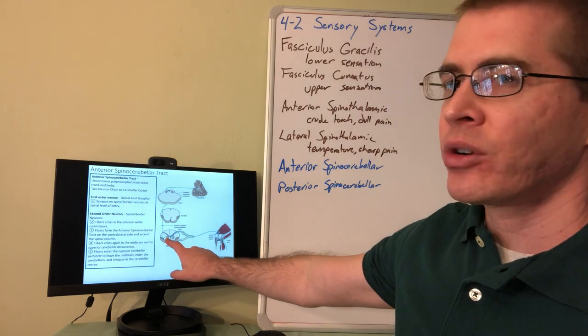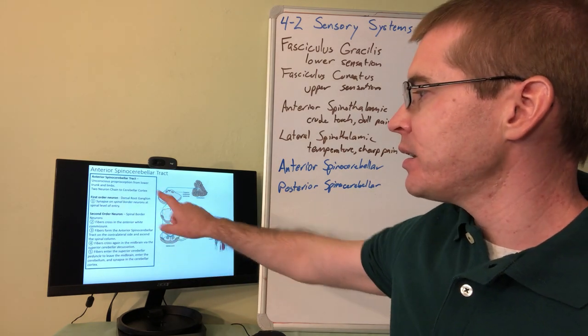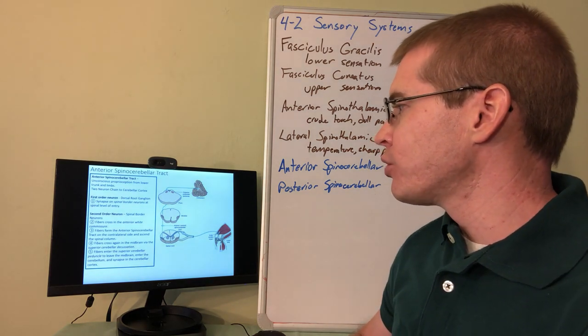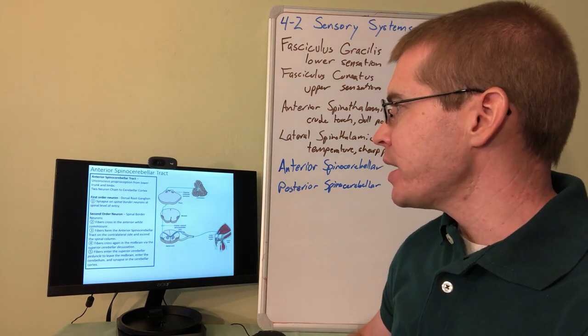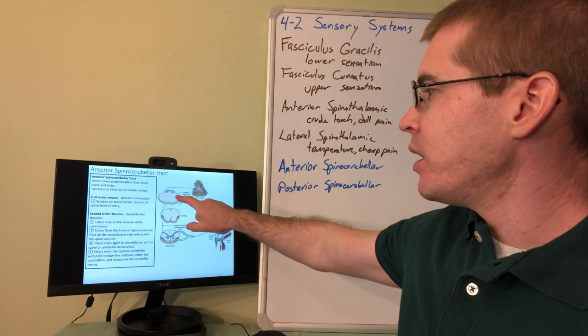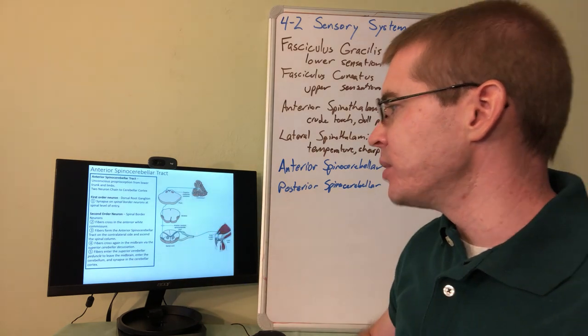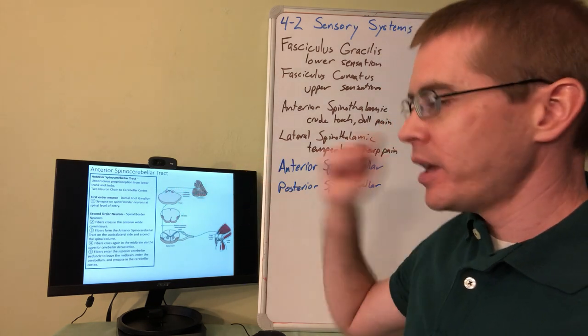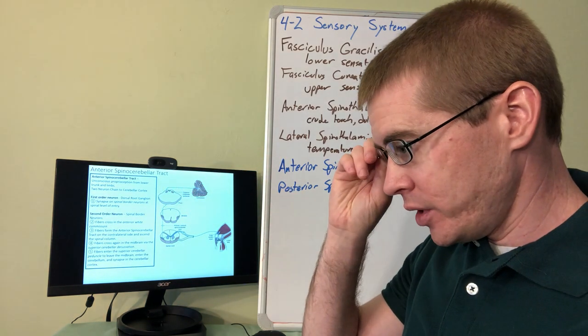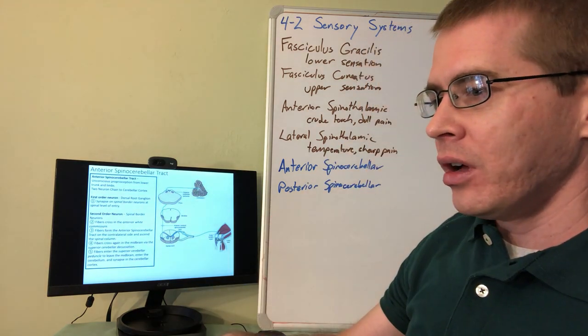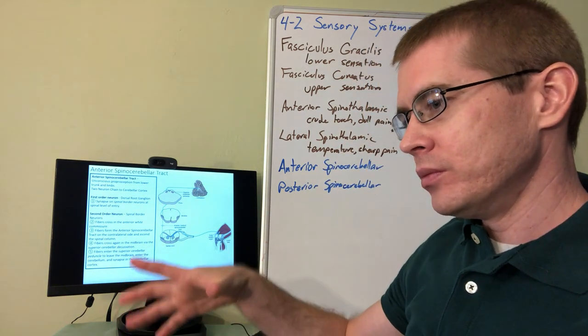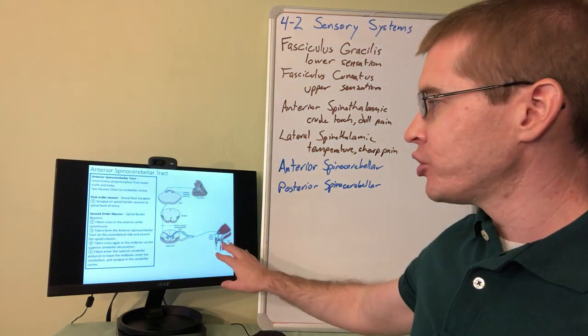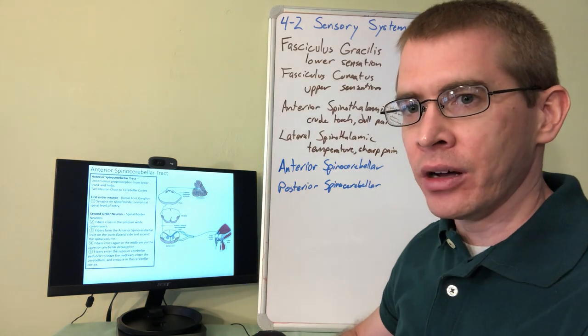It will cross in the anterior white commissure, ascend on the contralateral side, and then it will cross in the midbrain at the decussation of the superior cerebellar peduncle. So it will cross through that decussation of the superior cerebellar peduncle and enter the original ipsilateral side of the brain, ipsilateral to the side of the body that the sensation originated on.